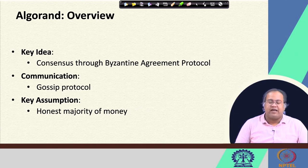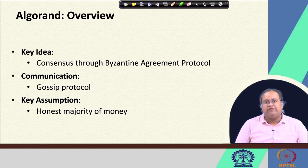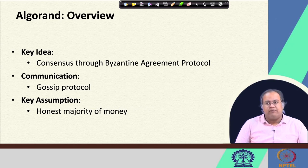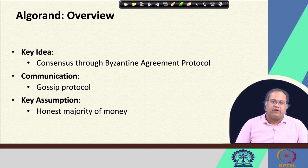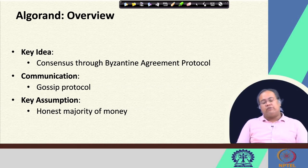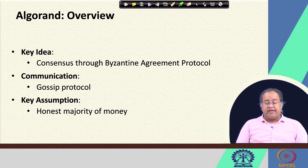The major limitation of Byzantine agreement, as we learned earlier, is the number of nodes it supports. The magic that Algorand does is to help the system achieve transaction scalability close to standard Byzantine agreement protocol, but with a large number of nodes in the network. The communication medium it uses, similar to Bitcoin, is the gossip protocol. The key assumption is the honest majority of money — people who hold more Algorand tokens are more viable to participate in the consensus mechanism.